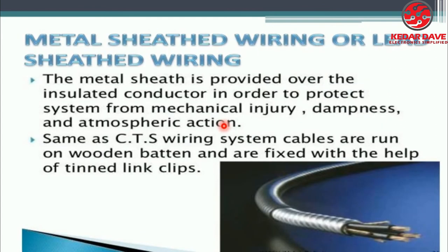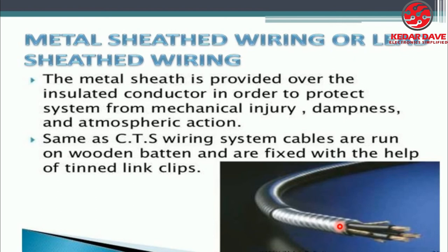The next type is metal sheathed wiring or lead sheathed wiring. A metal sheet is provided over the insulated conductor in order to protect the system from mechanical injury, dampness, and atmospheric action. Similar to CTS wiring, cables are run on wooden battens and are fixed with the help of tinned link clips. This wiring protects the wire from any mechanical changes in the atmosphere.